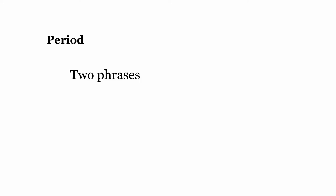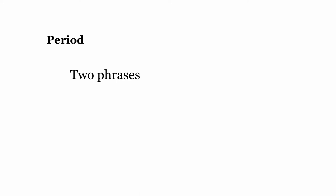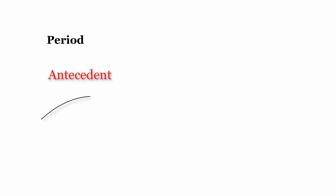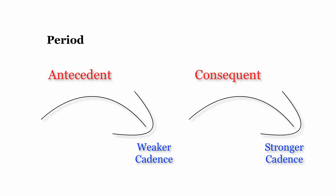Periods always consist of at least two phrases, and usually consist of exactly two phrases. Remember, phrases always end with cadences. I'll use arrows to illustrate phrases. In a period, the first phrase, called the antecedent, ends with a weaker cadence than the second phrase, called the consequent.